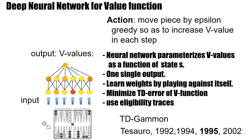So how can we use this for backgammon? Here I summarize the paper from 1995 by Tesauro. The action is to move pieces and the actions are chosen in an epsilon-greedy fashion so as to increase the V-value in each step. You look forward — where can I go, what would be the V-value of these possible positions — and then you try to play greedy, picking an action that maximally increases the V-value. The neural network parameterizes these V-values as a function of the state s, with one single output: the V-value. We learn weights by playing against itself.